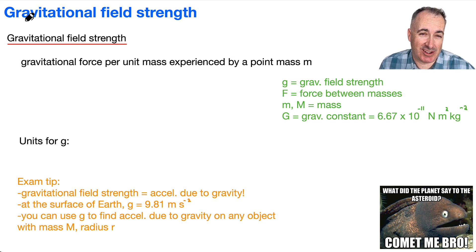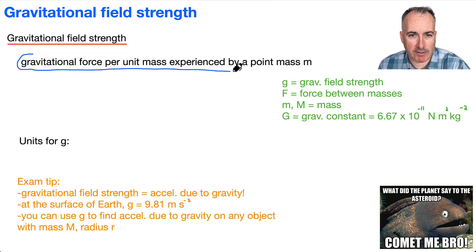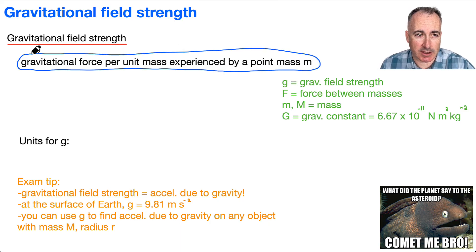So we've got gravitational field strength we're going to be learning about. We have this definition which is a bit nebulous, but let's write it down. We've got the gravitational force per unit mass, that's going to be the key thing here, experienced by a point mass m. So we have an equation here that goes like this: lowercase g equals F over m, which is also equal to G capital M over r squared.